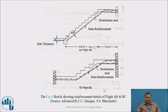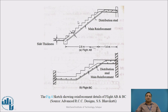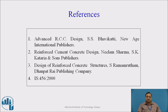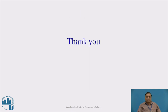For flight BC, there are landings on both sides with the going portion in the middle containing steps. Bottom main steel and perpendicular distribution steel are provided accordingly. Two sections are to be drawn for an open-well staircase: one for the first and third flights, and one for the second flight, since their load distributions differ. These are the references used for this presentation. Thank you.